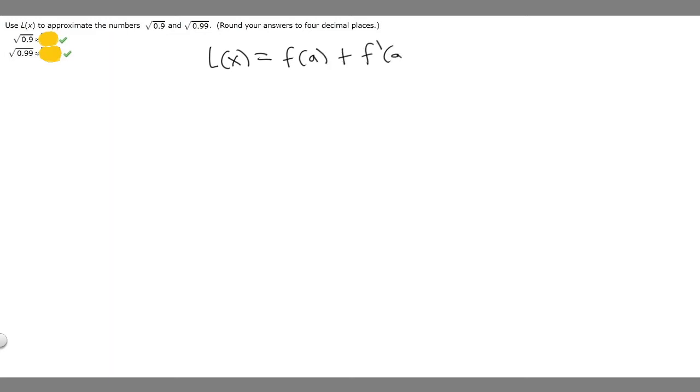First we need to decide what our variables are. Let's start with a. a is going to be a number that's close to the numbers they give us, so in this case we have 0.9 and 0.99, so the obvious clear candidate is 1. That number should be something you could square root that would come to a reasonable number. If I take the square root of 1, we know it's 1. So in this case we're going to choose a = 1.